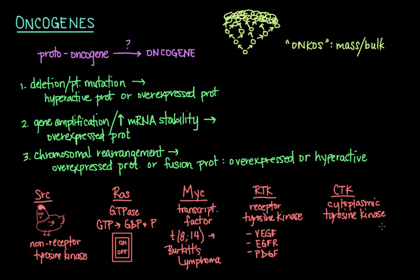Cytoplasmic tyrosine kinases mediate responses to the activation of receptors involved in cell proliferation, migration, differentiation, and survival. A well-known example is the BCR-ABL gene in chronic myelogenous leukemia (CML), also known as the Philadelphia chromosome. It is a fusion of DNA from chromosome 22, which contains the BCR gene, and chromosome 9, which contains the ABL gene. The resulting BCR-ABL fusion gene codes for a protein with high tyrosine kinase activity due to the ABL portion, and its unregulated expression activates proteins involved in the cell cycle and division, causing cells to grow and divide uncontrollably — essentially becoming cancerous.